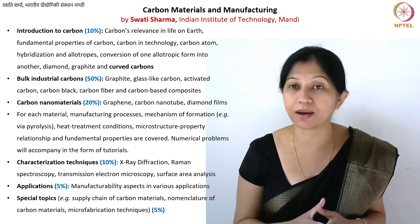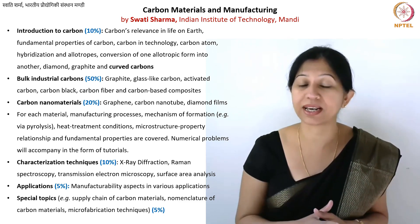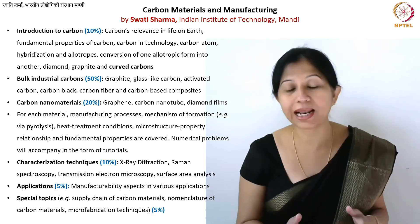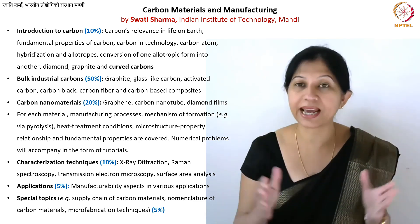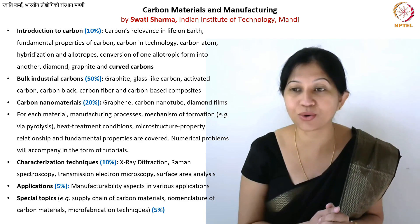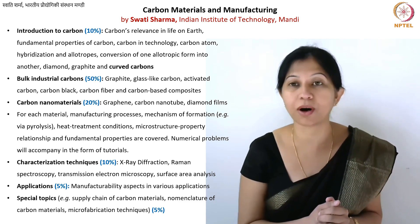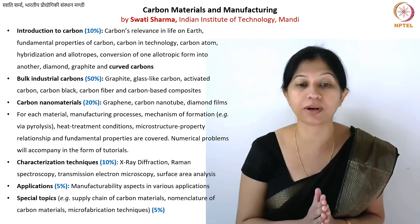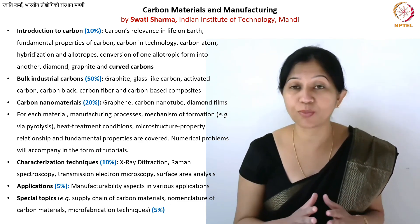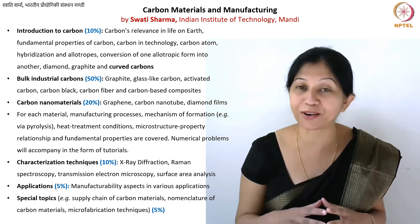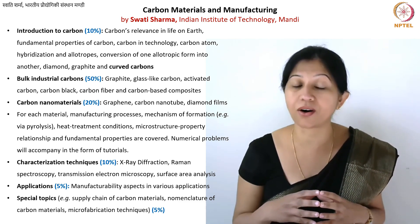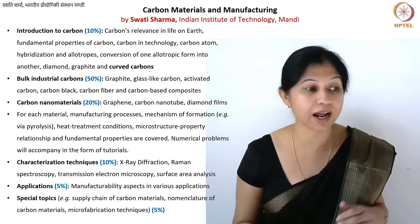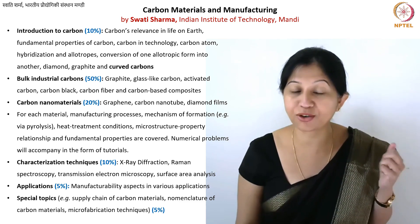You must be thinking that since we will talk a lot about hybridization, this might be more towards a fundamental science course. Well, that is only 10%. In the introduction to carbon part, we are going to talk about not just the carbon atom and hybridization, but also the phase diagram of carbon, the allotropes of carbon, what is the definition of allotrope itself, how many carbon allotropes already exist and how many are possible, how many primary allotropes we have and how many secondary allotropes we have.